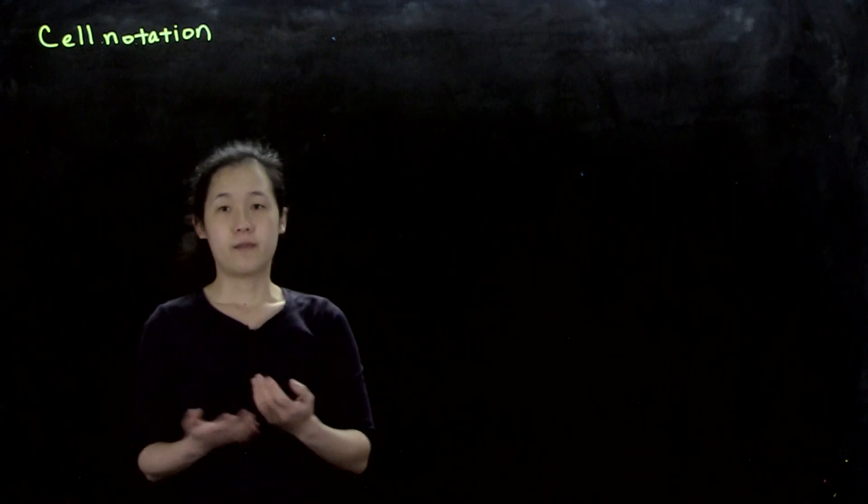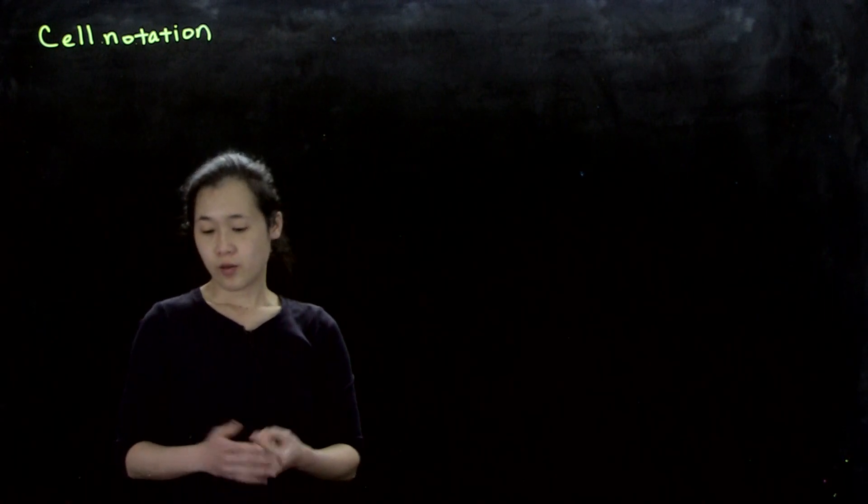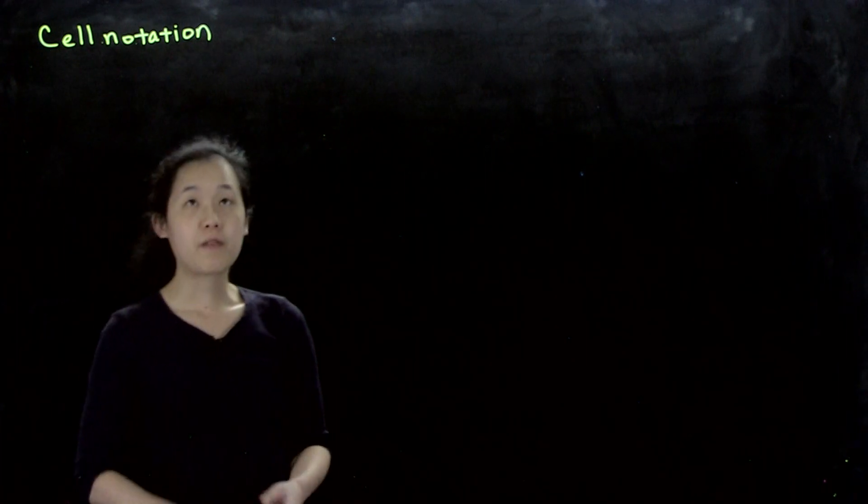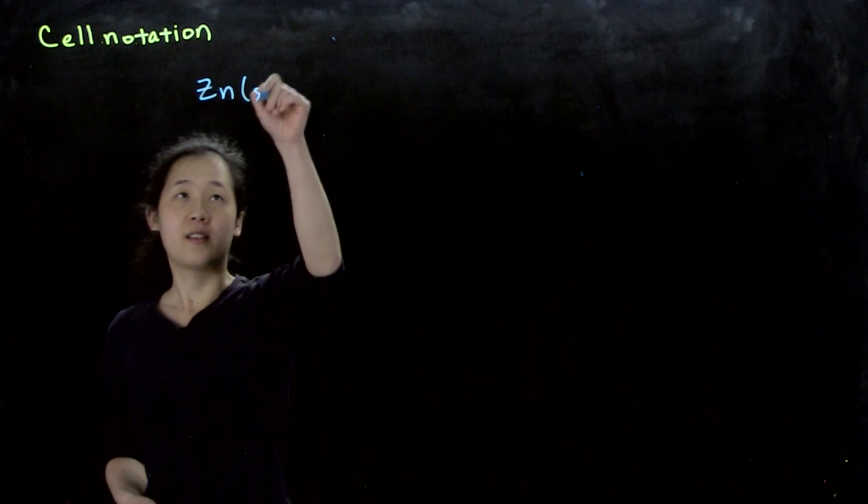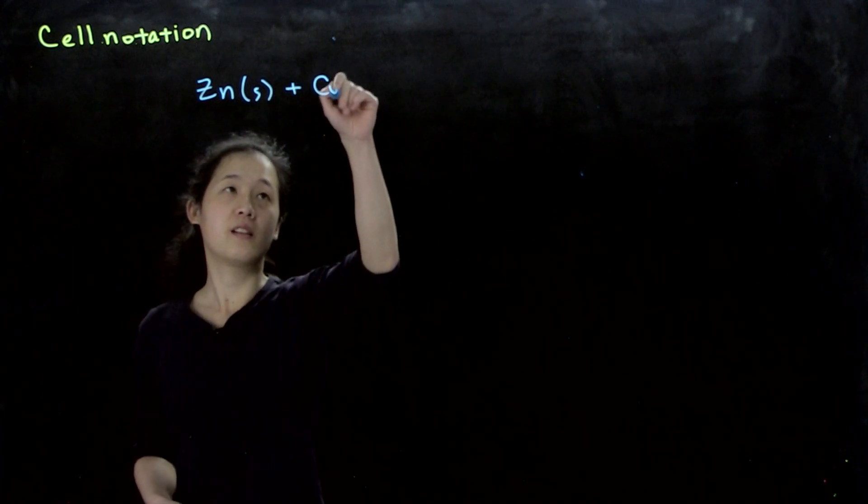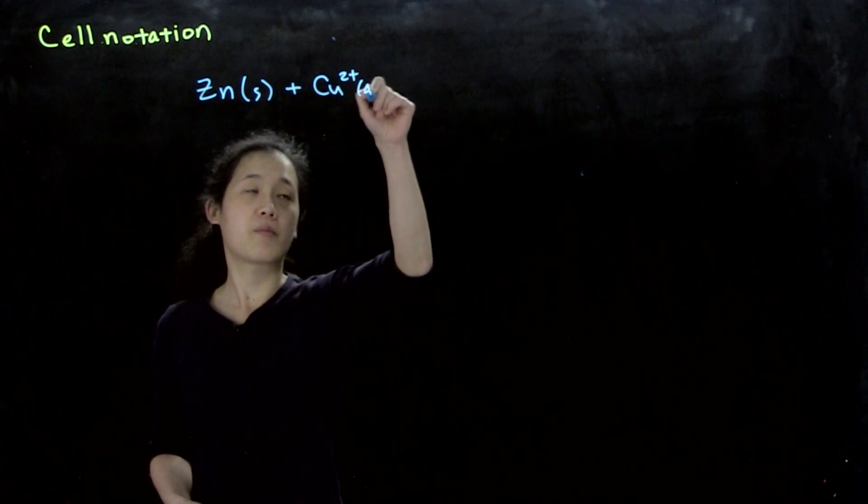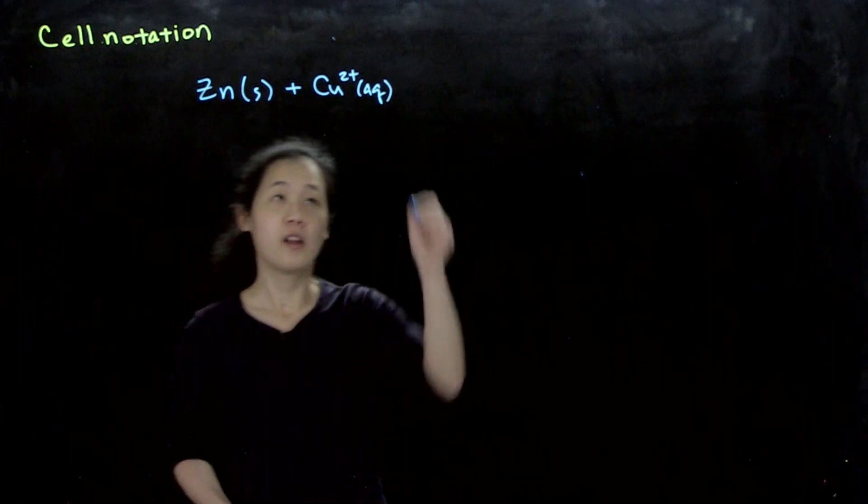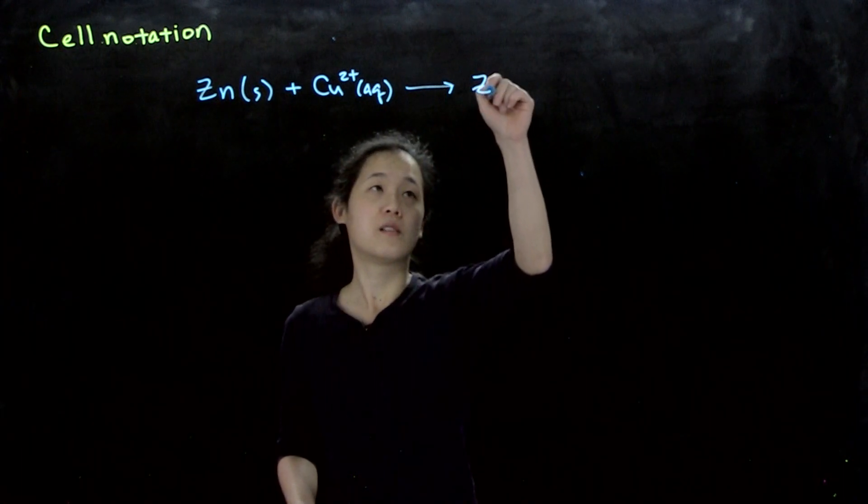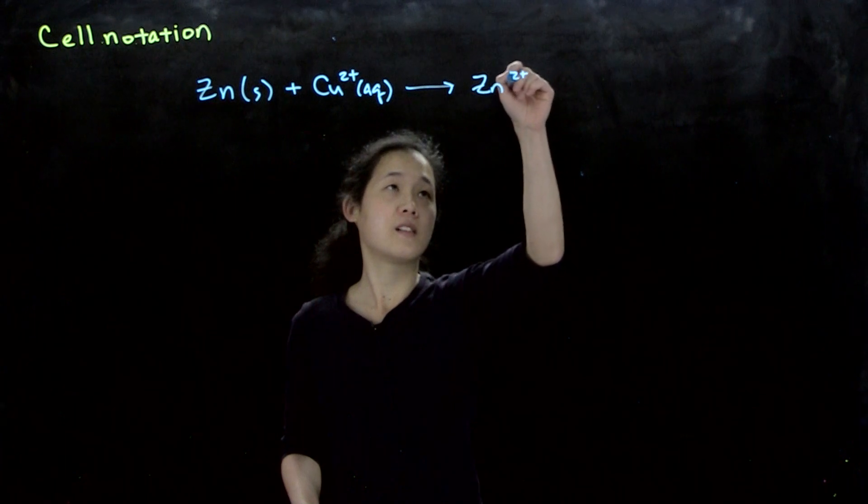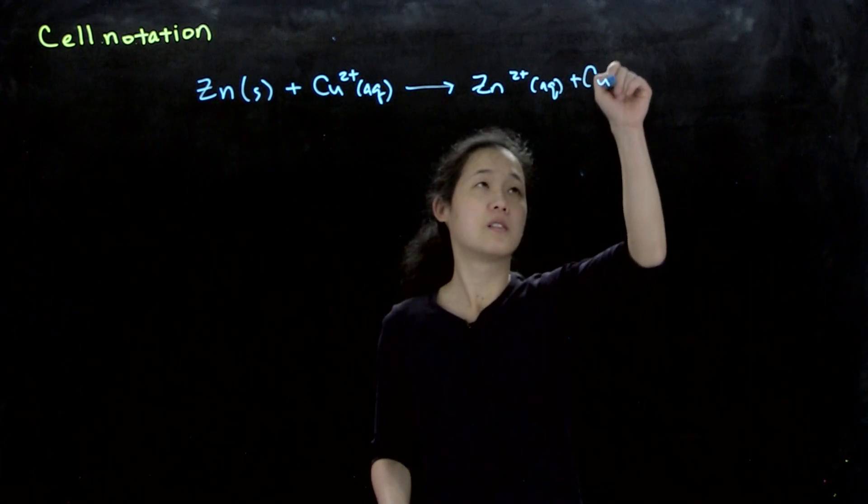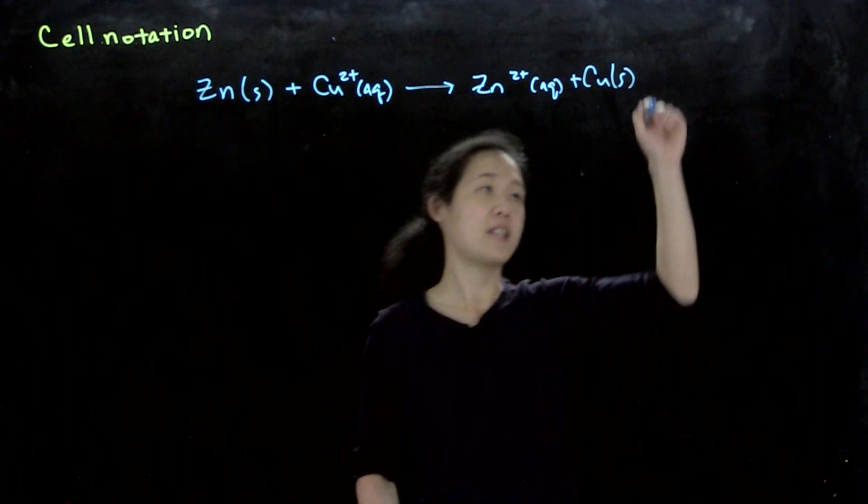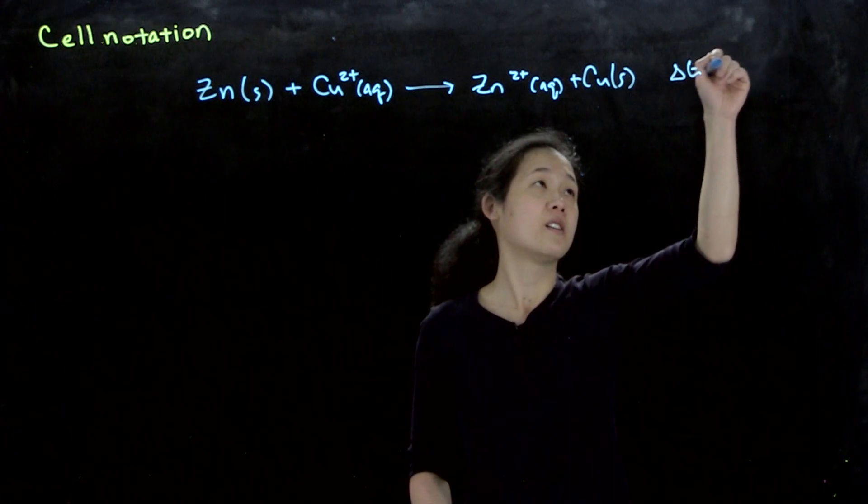On Monday, we talked about redox reactions. The example we did in class was zinc metal and aqueous copper 2+ in solution, which will spontaneously go to zinc 2+ and copper metal. This is spontaneous, so delta G < 0.